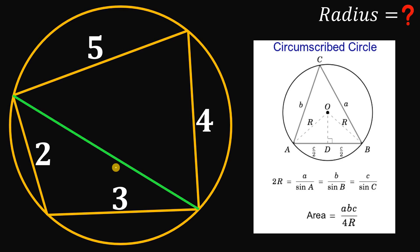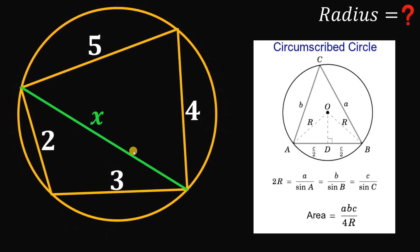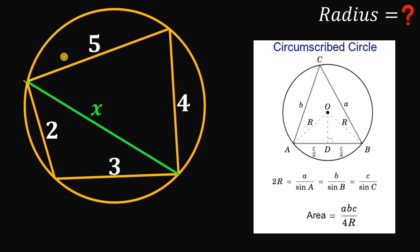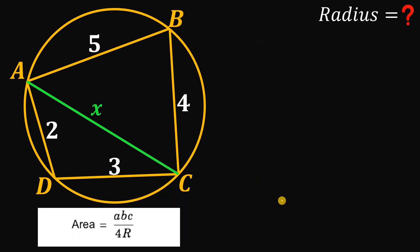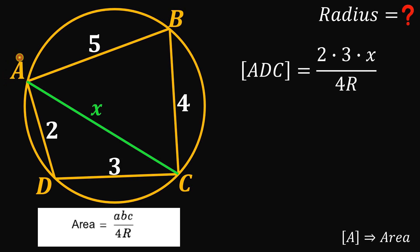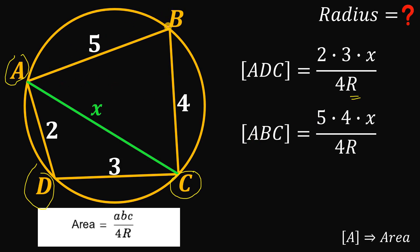Let's insert another chord and call it X. Now let's name some important points: this is point A, this is point B, this is point C, and this is point D. Using the formula, the area of triangle ADC equals 2 times 3 times X divided by 4R. And the area of triangle ABC equals 5 times 4 times X divided by 4R.